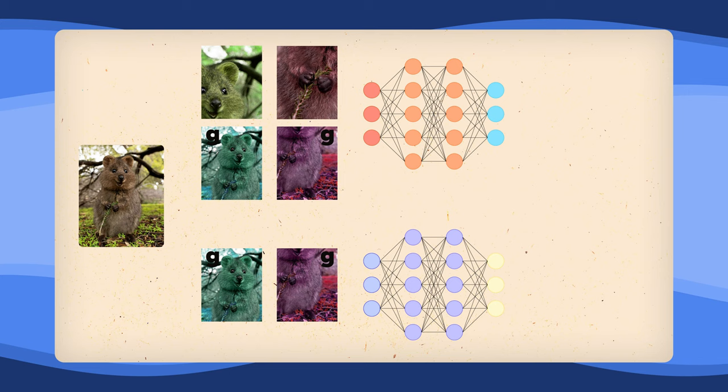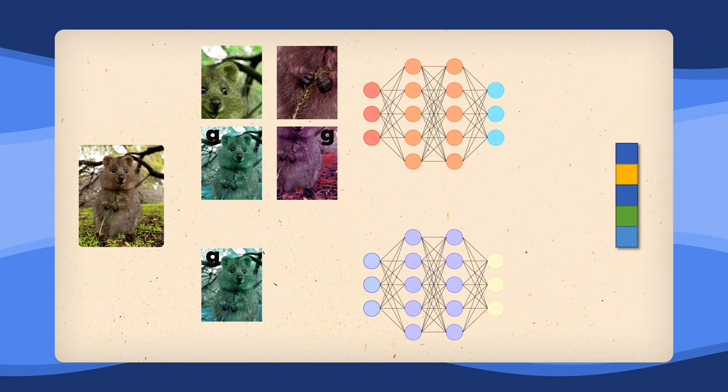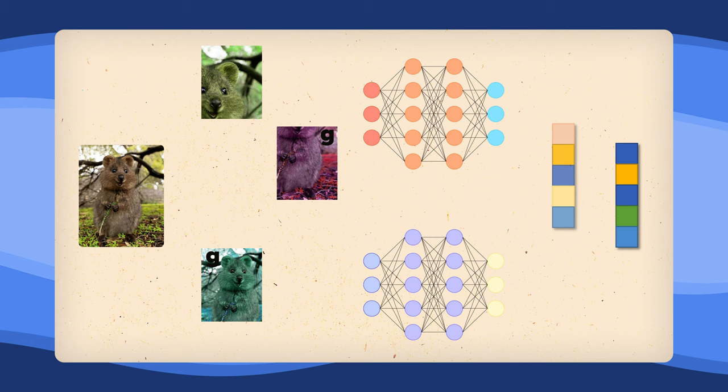What we're now comparing is the teacher embedding of one of the global crops and all the embeddings of all the samples from the student network, except for the embedding of the same global view.